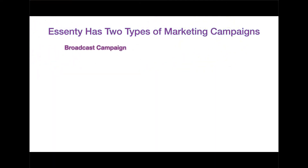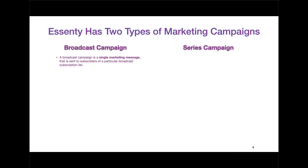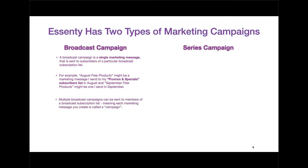Ascenti has two types of marketing campaigns: a broadcast campaign and a series campaign. A broadcast campaign is a single marketing message sent to subscribers of a particular broadcast subscription list. For example, August free products might be a marketing message sent to a promos and specials subscribers list in August, and September free products might be one sent in September. Multiple broadcast campaigns can be sent to members of a broadcast subscription list, meaning each marketing message you create is called a campaign. A marketing message can be emails or texts.